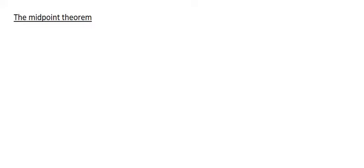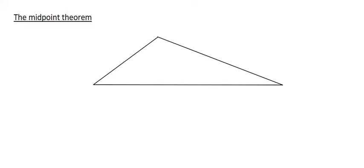So what the theorem says is that if we have a triangle — let me label this as A, B, and C — we are going to locate the halfway point of AB, which is approximately over there. Then we locate the halfway point between A and C, which will probably be somewhere over there. Then we connect a line between those two points.